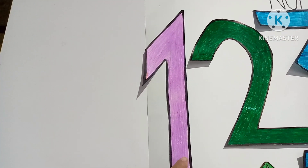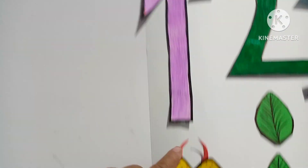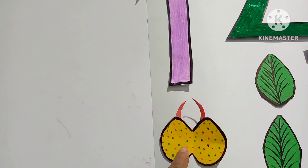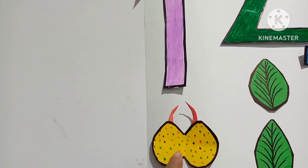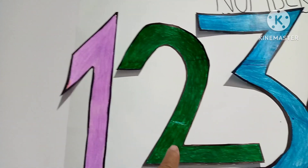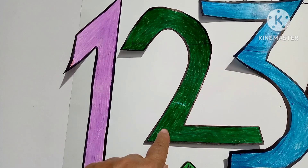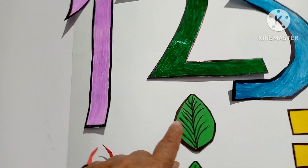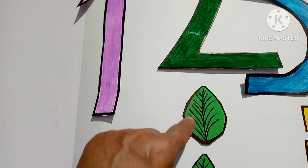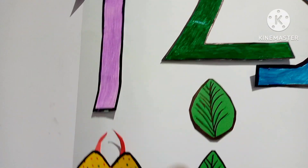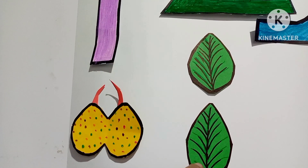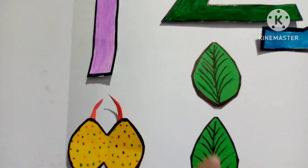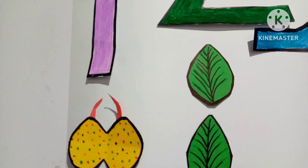Number one — one butterfly. Number two — two leaves. Let's count: one and two. Two leaves. There are two leaves.